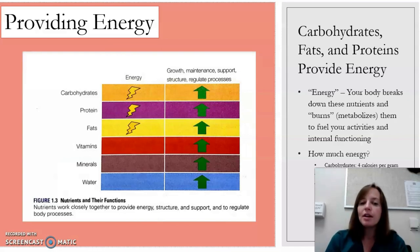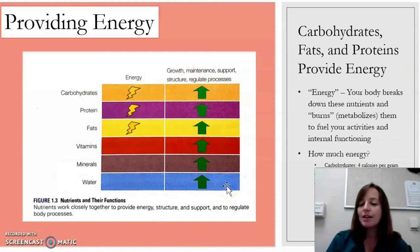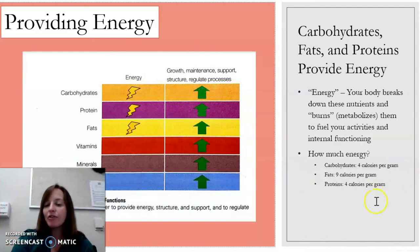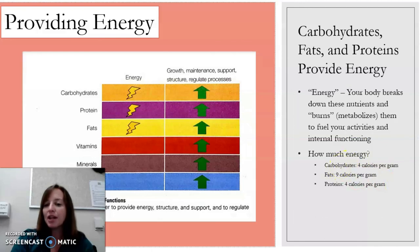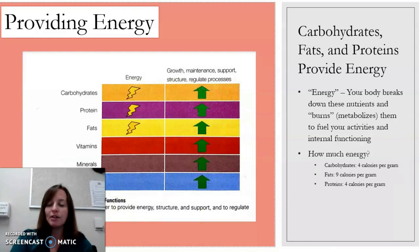Of those six nutrients, three of them provide us energy: carbohydrates, protein, and fats. All nutrients help us grow, maintain, and function properly as animals, but carbs, proteins, and fats are the ones that provide us calories. The number of calories from each: a gram of carbohydrates is four calories, a gram of fat is nine calories, and a gram of protein is four calories. So protein and carbs have similar amounts of calories, while fats have over double that number.